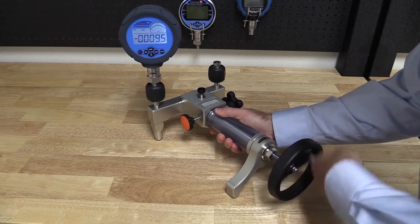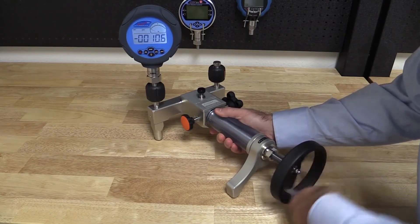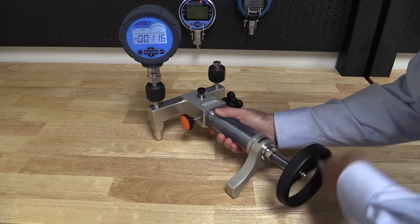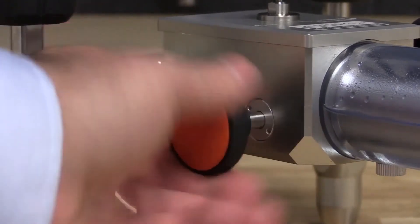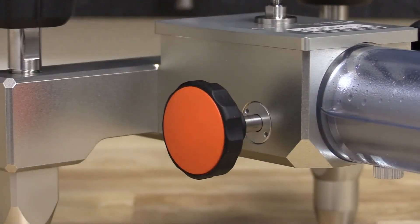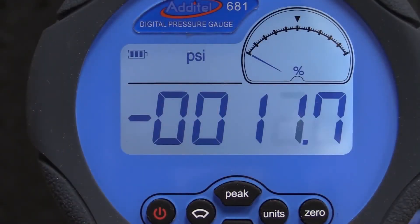You'll notice a slight vacuum being pulled on your reference gauge. The strength of the vacuum can be a good indicator of the amount of gas in the system. Now that we have a vacuum pulled on the system, we will open the vent valve and let fluid fill into the system. You'll notice this by the gauge settling to zero.